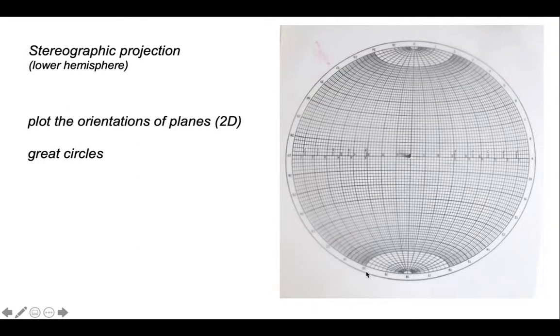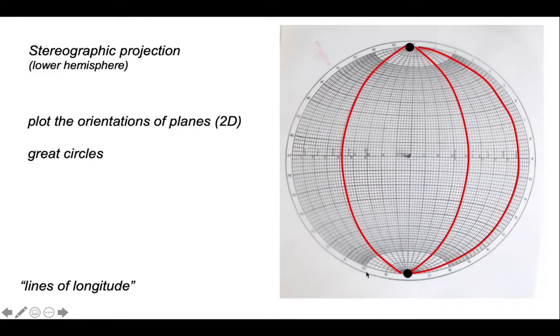Now we're going to look at how planes plot on a stereographic projection. The stereographic projection is a representation of the three-dimensional world in two dimensions. So the stereographic projection is a 2D representation of a sphere. Great circles are essentially rather like lines of longitude and they run top to bottom on this projection.